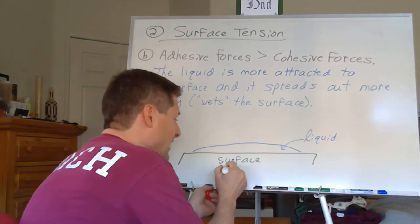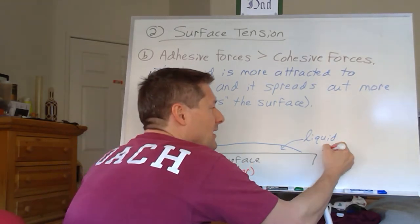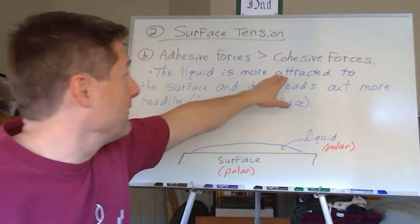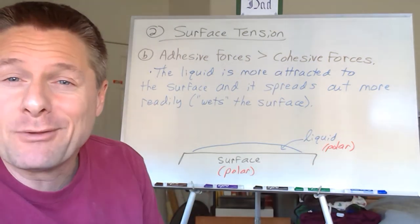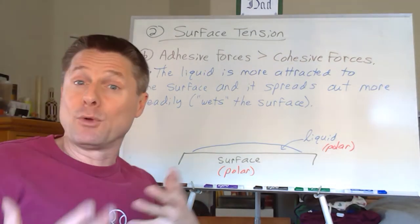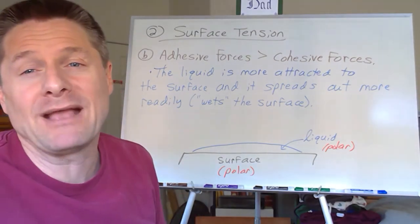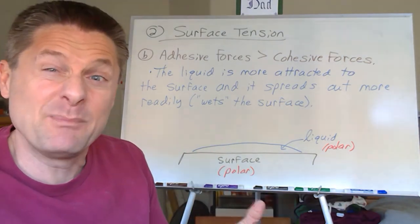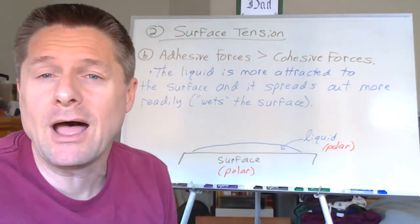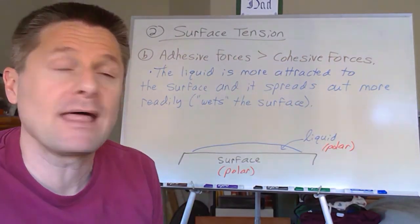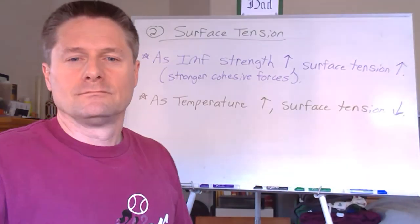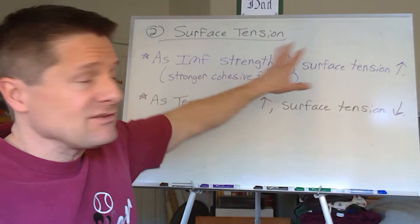Let's look at what affects surface tension: intermolecular force strength and temperature. As the cohesive forces increase — as intermolecular force strength increases — surface tension increases. Whether the liquid beads up or wets out depends on what the adhesive forces are, so you always have to consider what surface it's on. Temperature has a fairly universal effect: as temperature increases, atomic and molecular motion increases, disrupting intermolecular force strengths.